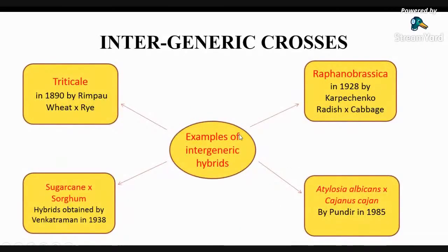Here are some examples of inter-generic hybridization. A well-known example is triticale, in 1890 by Rimpu, which was a cross between wheat and rye. Another example is Raphanobrassica, in 1928 by Karpechenko, which was a cross between radish and cabbage. Another example is a cross between sugarcane and sorghum obtained by Venkatraman in 1938. One more example is Atylosia albicans crossed with Cajanus cajan by Pundir in 1985.